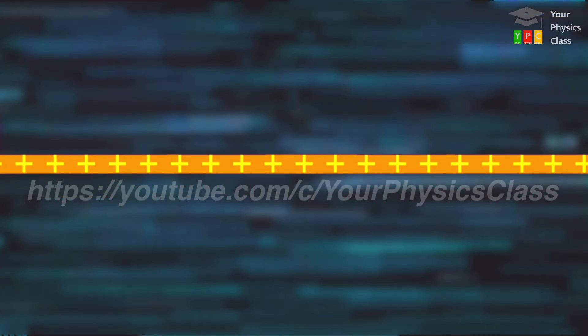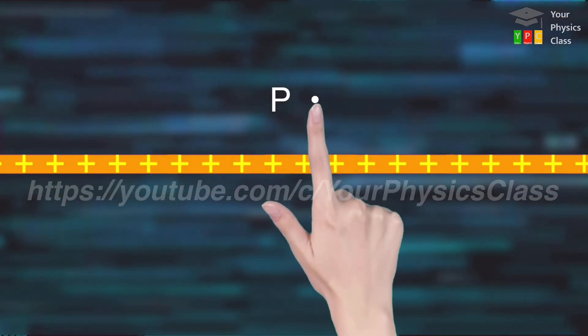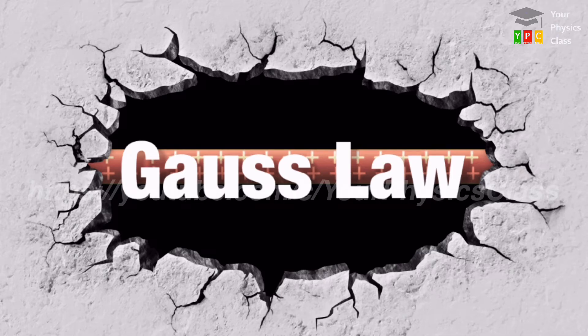Conductor ke kuch duri par, hume point P per electric field intensity determine karni hai. Aur is ke liye hum Gauss law ka use karenge.